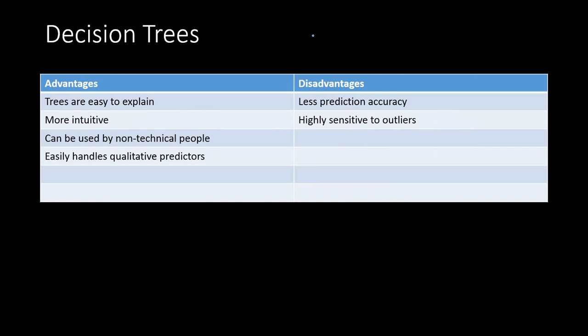So that's a special case of data analysis where linear regression is always preferred. Now here is a comparison of the advantages and disadvantages of using decision tree. Decision trees are easy to explain. I have already said this and they are more intuitive in nature.